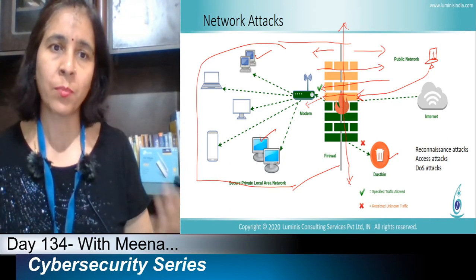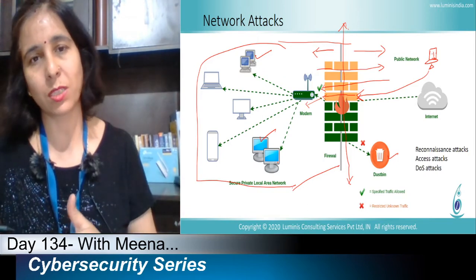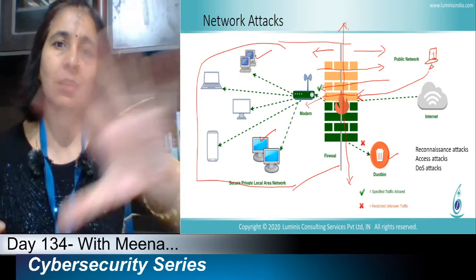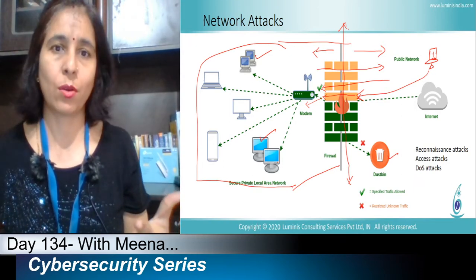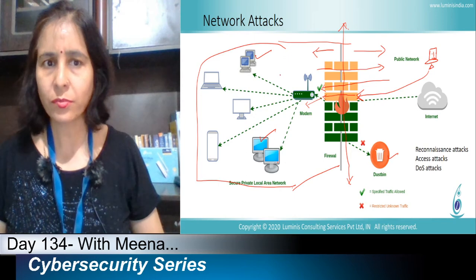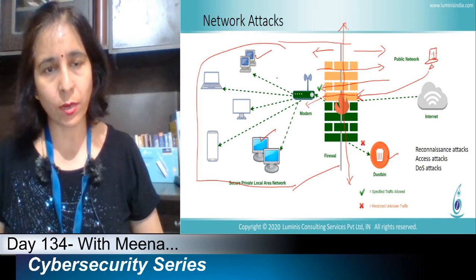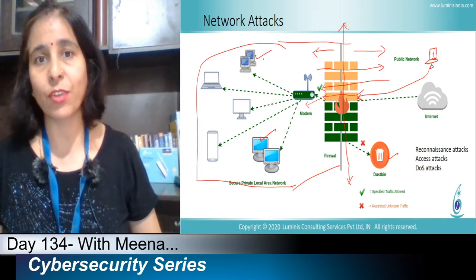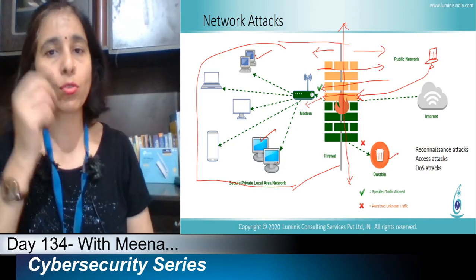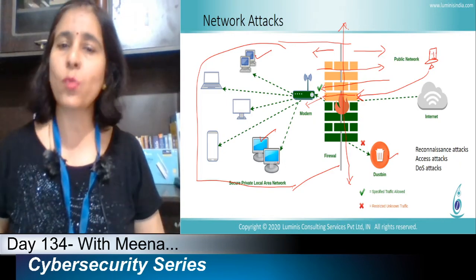They try to discover what services and applications are running on those servers, and what usernames, passwords, or password hash values exist. They are mapping the complete structure of the network. After that, they will perform an access attack — using the knowledge of the network to find the weakest part and figure out how to compromise it.